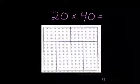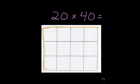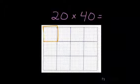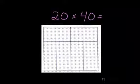In this example, we have 20 times 40. What I've done is I've taken this grid and I've already split it into 10 by 10 by 10 by 10 squares.